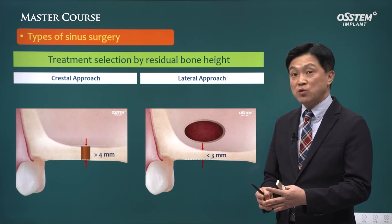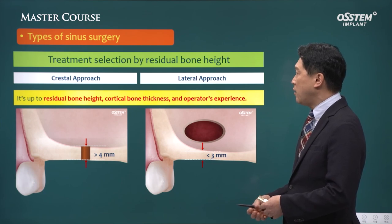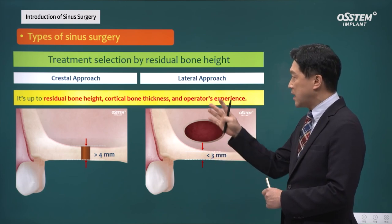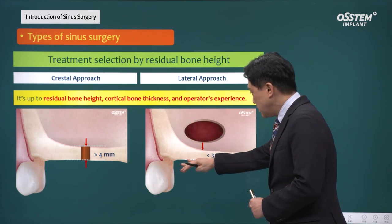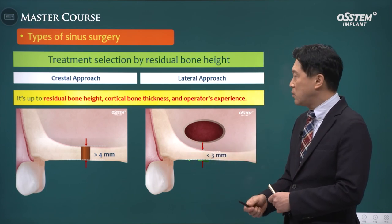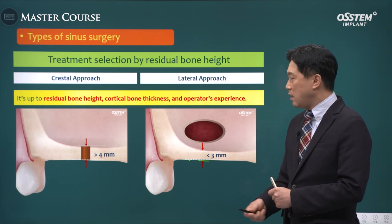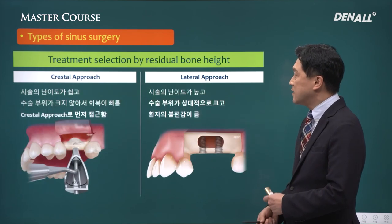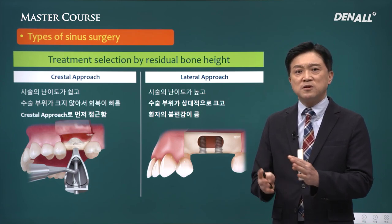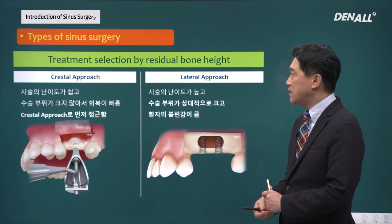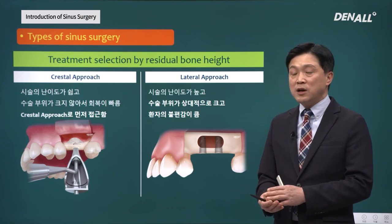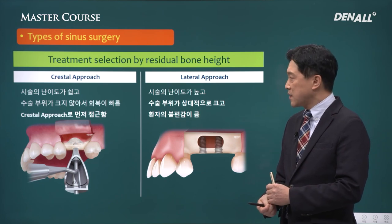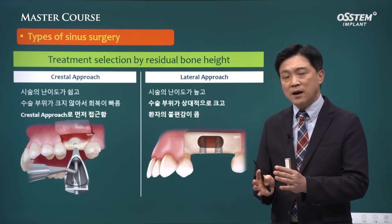The amount of bone that needs to be generated can also be used as a criteria. When choosing between crestal and lateral approach, the most common way is to use residual bone height, and you can also consider residual cortical bone thickness. More than anything else, you need to consider the operator's experience. If you can do crestal approach even with less than 4 mm of residual bone, then you should go forward. The crestal approach is easier than lateral approach, the surgical site is not extensive, and healing occurs faster. If the residual bone amount is 4 to 5 mm, then it would be ideal to use crestal approach.